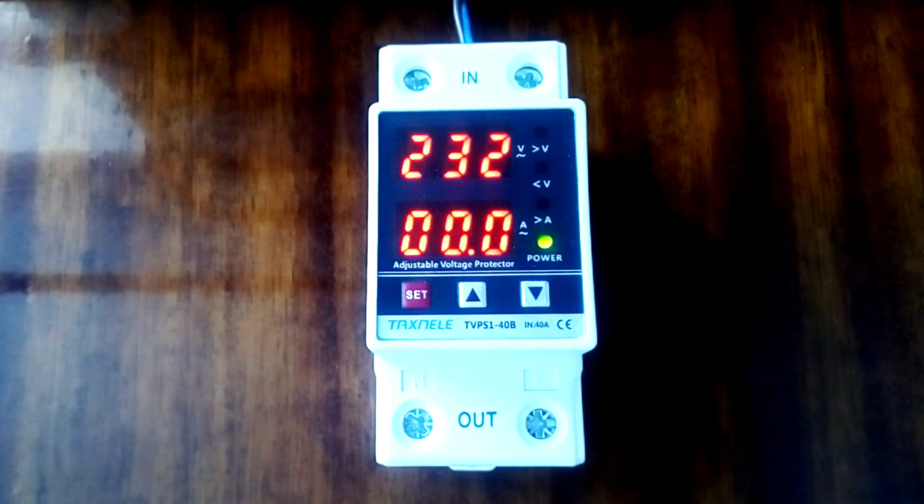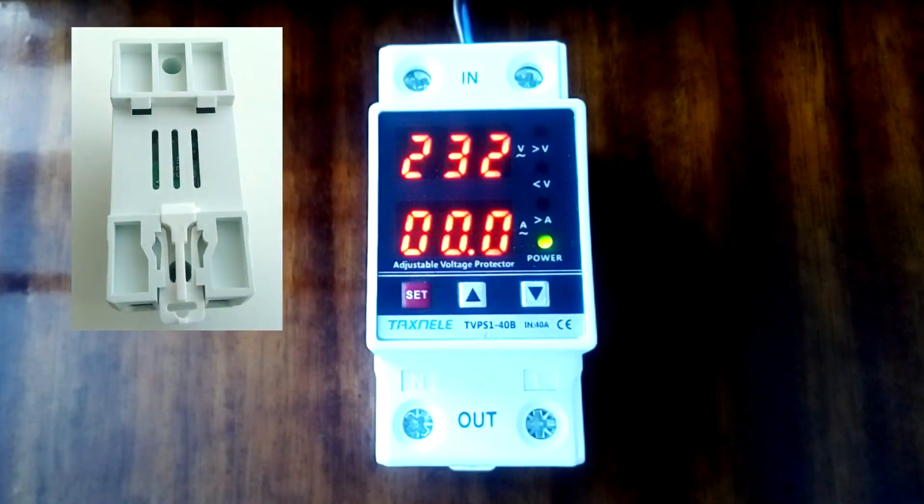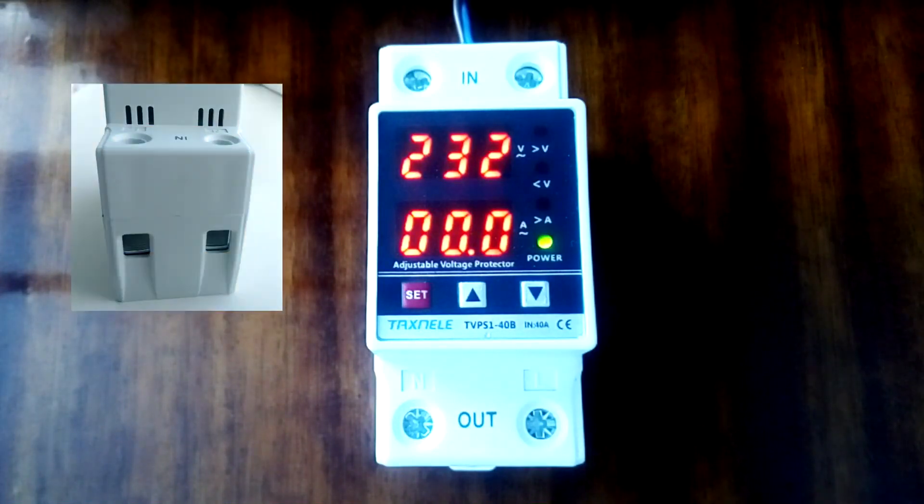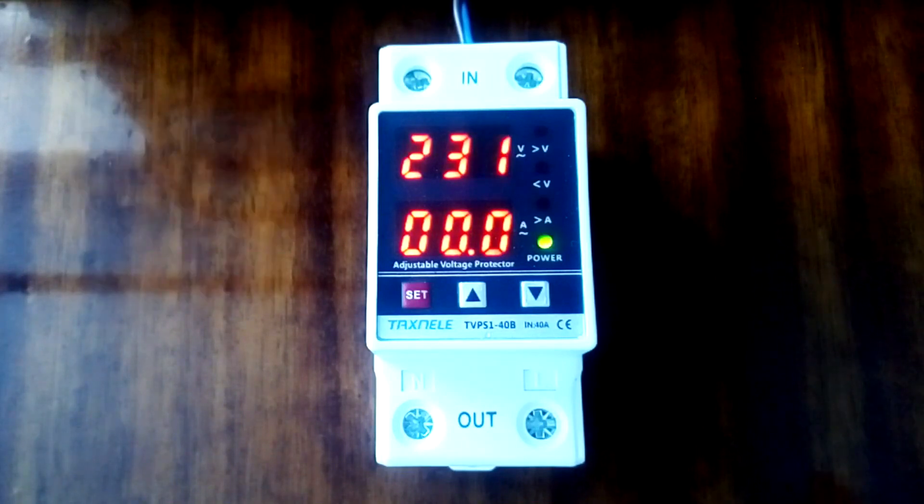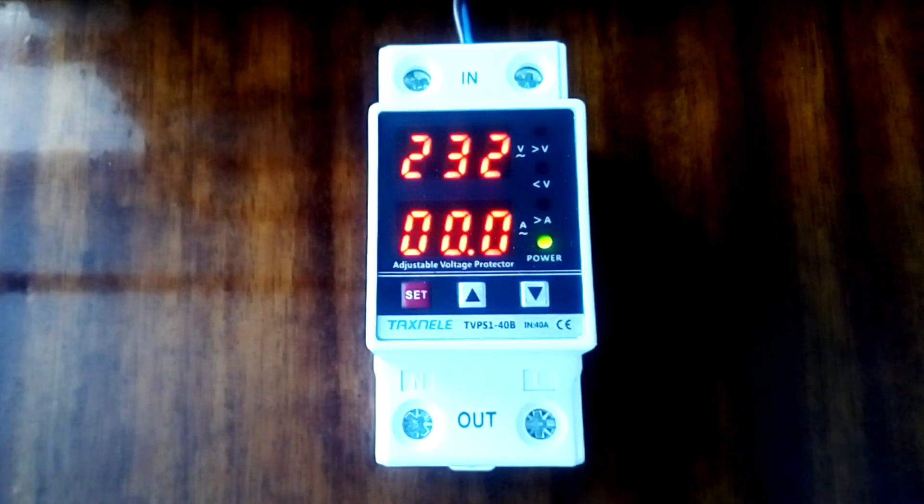The voltage relay consumes power up to 2W and allows protection to operate up to 100,000 times. Mounts on 35mm DIN rail. This relay allows you to connect wires up to 25mm too. Wires of larger cross section are practically not used in household electrics. This voltage relay is 40A and 63A. I posted a link to this relay in the description.